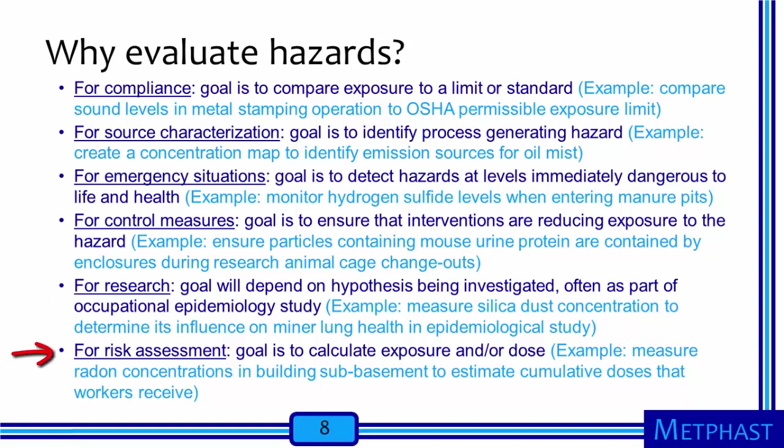Finally, we might evaluate hazards for risk assessment purposes. Here I'm talking about a formal risk assessment where the goal is to calculate exposure and/or dose for a worker exposed to an agent of concern, so that we might compare that exposure or dose to the potential health effects in order to characterize the risk of an adverse health outcome. An example is to measure radon concentrations in building sub-basements to estimate cumulative doses that workers receive. We will talk more about risk assessment and risk characterization in the next module.